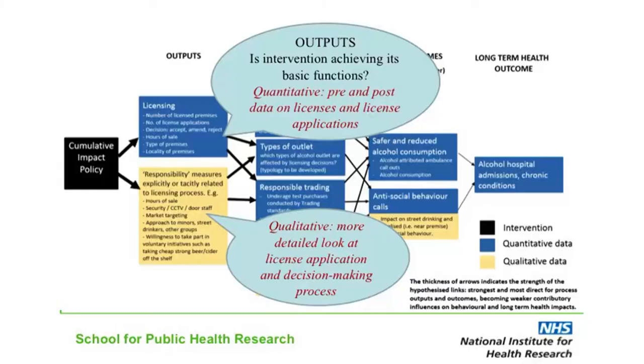You can now see the thought bubble labelled outputs. Once you've got an idea of what the intervention actually is, it's time to think about what it's immediately going to deliver. Cumulative impact policy is a licensing intervention, and so the thing that it delivers first and foremost is licensing changes — changes to possibly the number of licenses granted and changes to the type of licenses granted to serve alcohol, both on and off premises. To evaluate these immediate outputs, the obvious thing is to collect data on licensing decisions over time, which is what we did. Besides collecting statistical data, we also talked to people involved in the licensing processes to learn more about how they think cumulative impact policy has affected what they do.